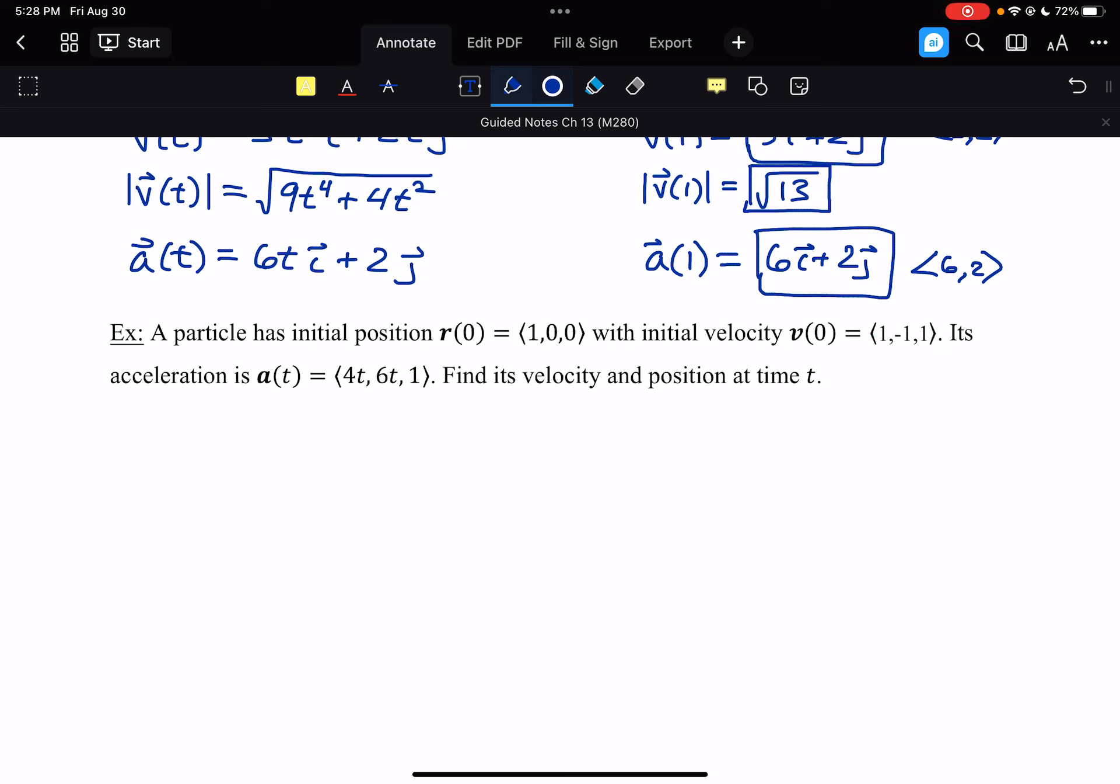We know initial position, we know initial velocity, and acceleration is (4t, 6t, 1). We've got a formula for acceleration. Find its velocity and position at time t. We know that acceleration is the derivative of velocity. That means that velocity is the antiderivative of acceleration. If we have a and we want to find v, we need to integrate. So we're going to take the integral of a(t)dt, and that's going to give us (2t², 3t², t). This is indefinite, so we're going to add that vector constant of integration, c, which we don't yet know what it is.